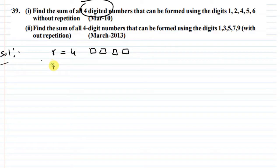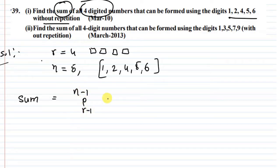Using digits 1, 2, 4, 5, 6. We have n equals 6. Without repetition, we need to find the sum of all 4-digit numbers that can be formed.